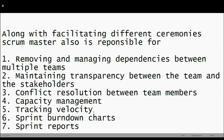The Scrum Master is also responsible for sprint burndown charts — charts that showcase the progress of the sprint. From when a sprint starts, the burndown chart is at its peak and then goes down toward the end, showing that all promised work has been completed. Sprint burndown charts are automatically created in Jira, and in part three of this video I will show how to create them in Excel and Jira.